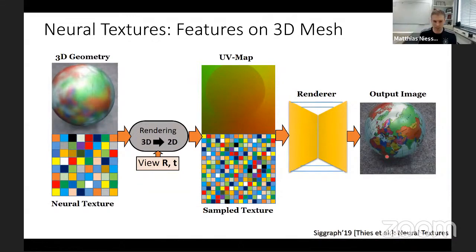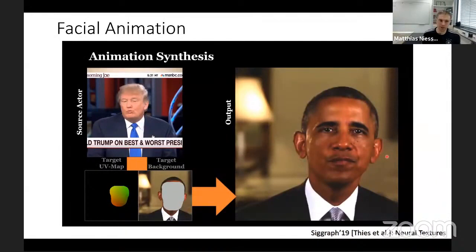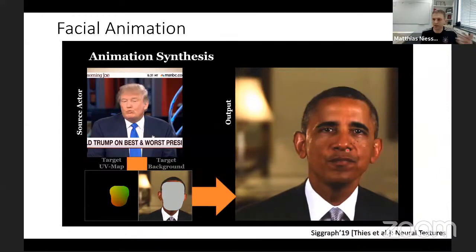This can be done for novel scene synthesis and all kinds of applications, but also for facial reenactment. Here we have a video of Obama, we reconstruct his face, obtain a UV map, learn the neural textures for the UV part, and then learn to re-synthesize Obama frames from the neural network with the re-rendering of the neural pixels. This pipeline can be trained end-to-end and can be completely animated by a source video. What you see on the right-hand side is a completely synthetically synthesized video.